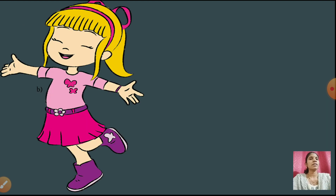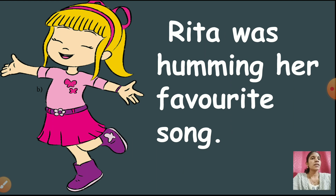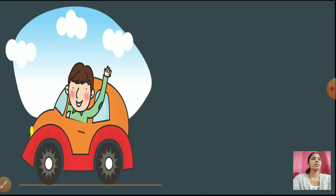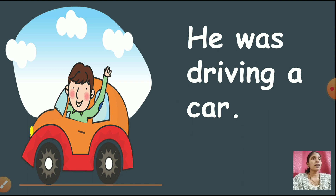Let us see some more examples. Rita was humming her favorite song. Here we are talking about one naming word, that is Rita, and what she has done is already over. He was driving a car — again, we are talking about one single person.